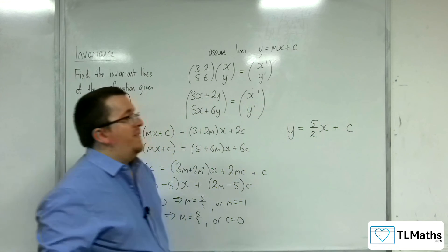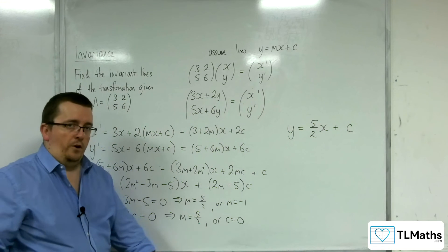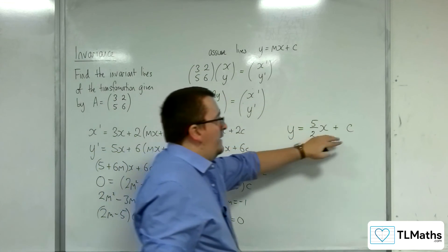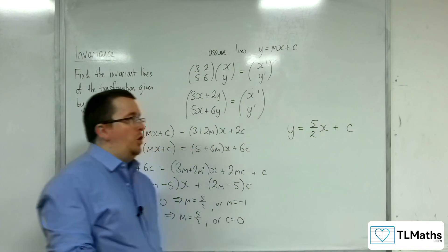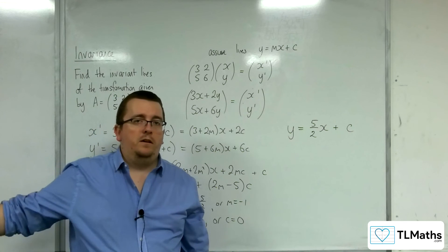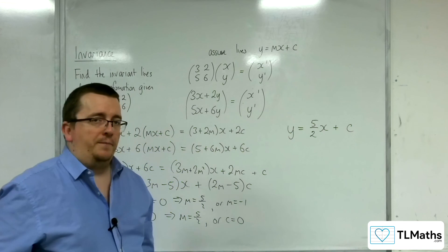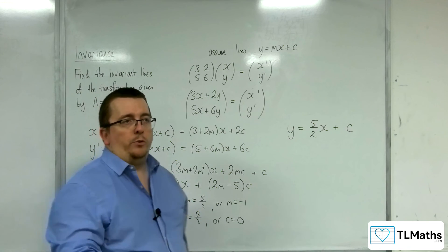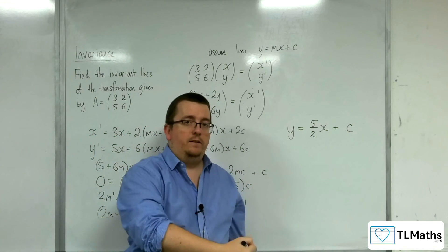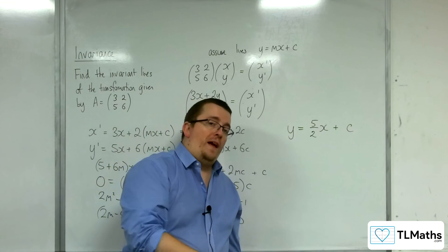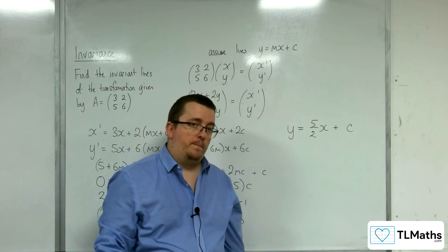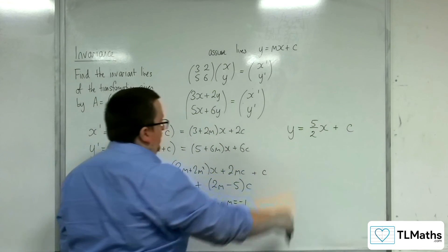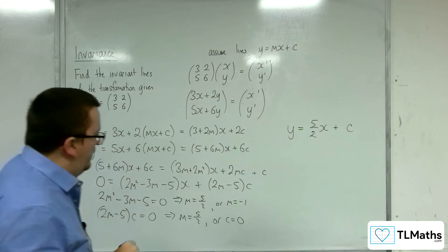So that means that there are a whole family of invariant lines. So that value of c could be 2, minus 18, a billion. It doesn't matter. However, any point that starts on the line y equals 5 halves x plus c will remain on that line after this transformation. So that's quite a big result from this. But that's not the only thing.